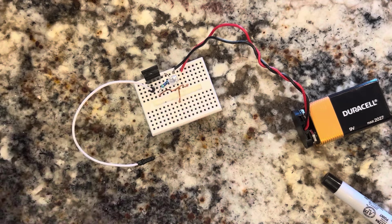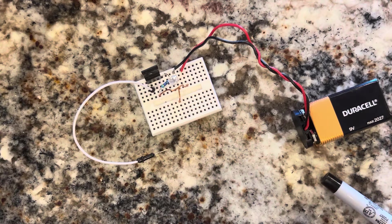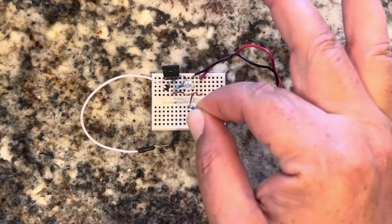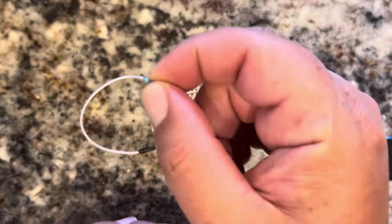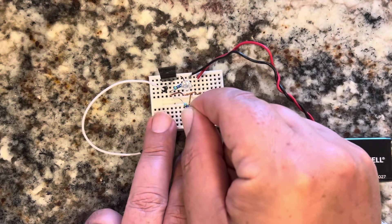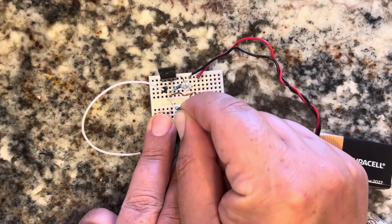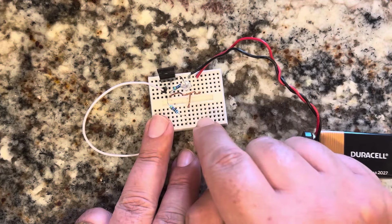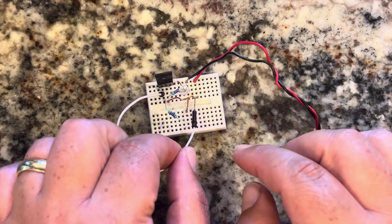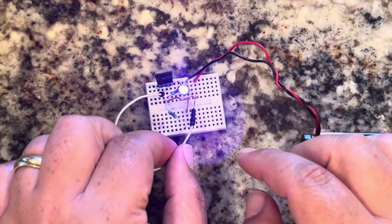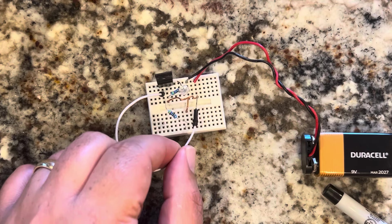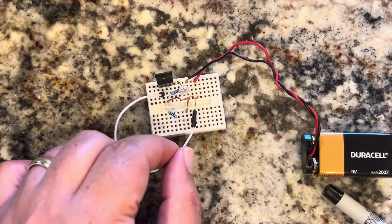But in order to prevent this, you need at the gate, at the gate source, a pull-down resistor. I have a 4.7K resistor here that I put to ground. And now, when I touch the wire, it goes on as long as I'm holding it there. The minute I take it off, this is a pull-down resistor. So you need a pull-down resistor at the gate to make this happen.